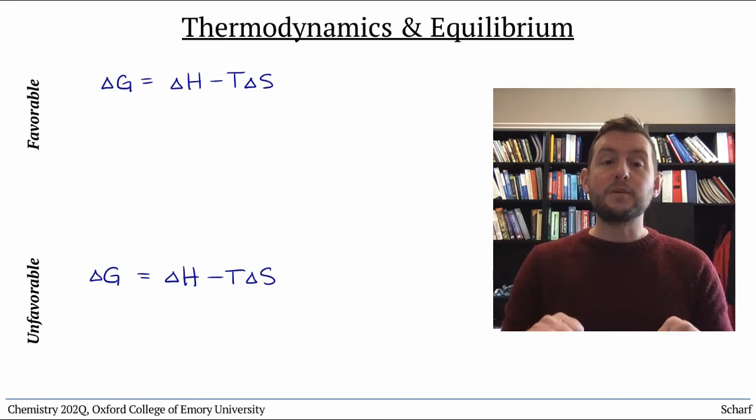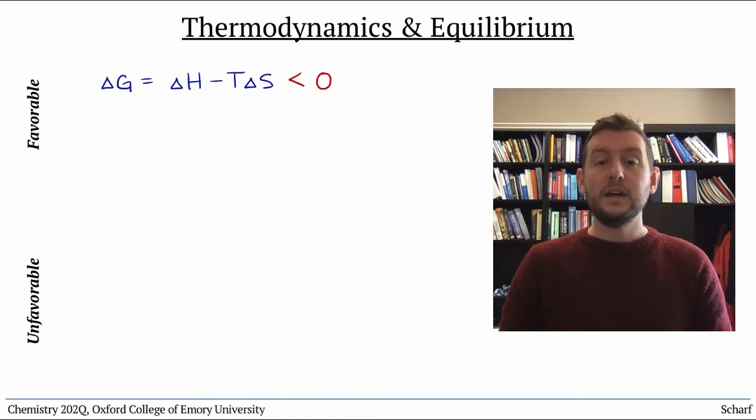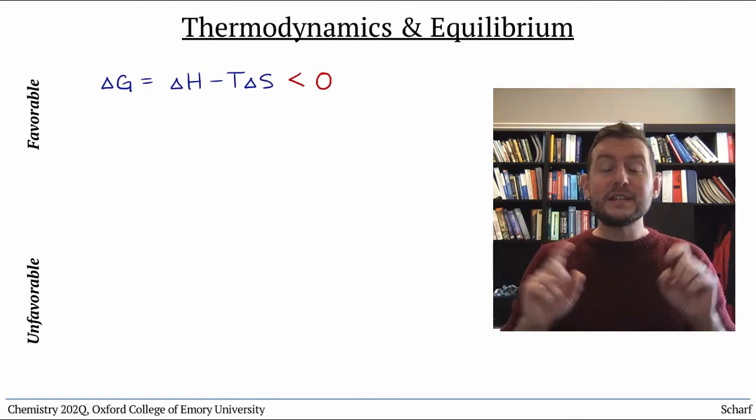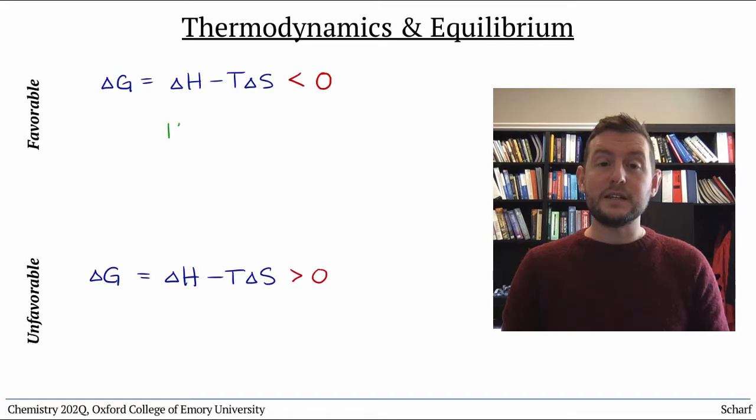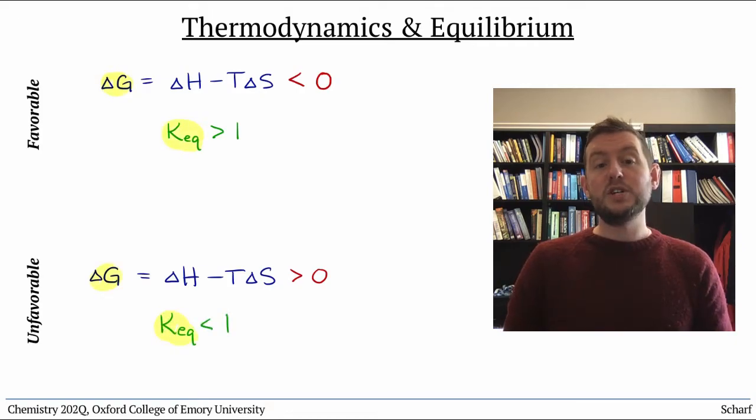The more negative a reaction's delta G, the more favorable it is. A reaction's favorableness is also described by its equilibrium constant. Large equilibrium constants correspond to highly favorable reactions. Since both delta G and K reflect how favorable a reaction is, you might expect there to be a mathematical relationship between the two.